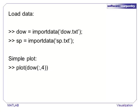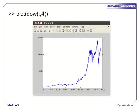First, we load our data into two variables, Dow and SP, using the importdata function that we introduced in the lecture on File I/O. Then, it is easy to plot the column of closing values for the Dow Jones. The plot looks familiar to anyone familiar with finance, but the axes may not make sense. If you are an economist, you know that there was a market crash in 1987. The crash might be that small bump before the graph starts growing, but it is hard to say. Since we only told MATLAB to plot a vector, the x-axis is the index in the vector.